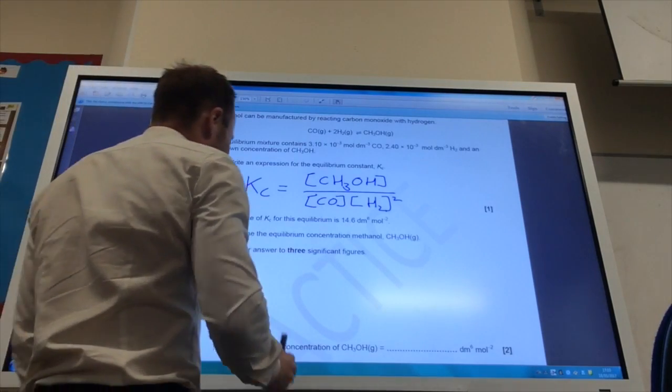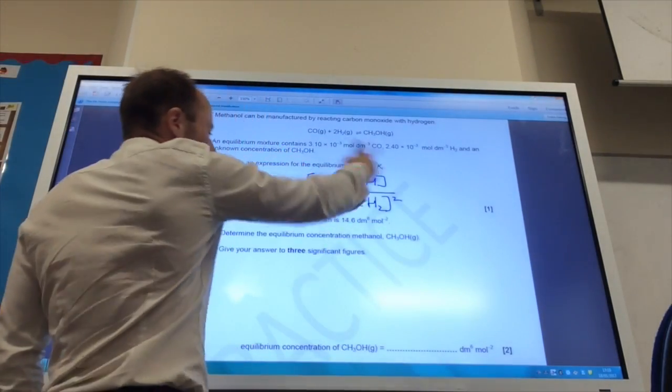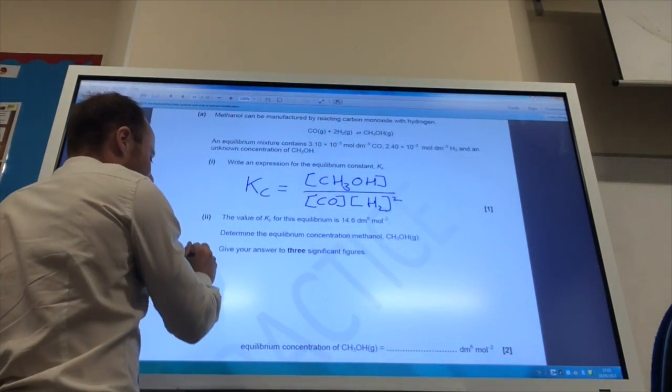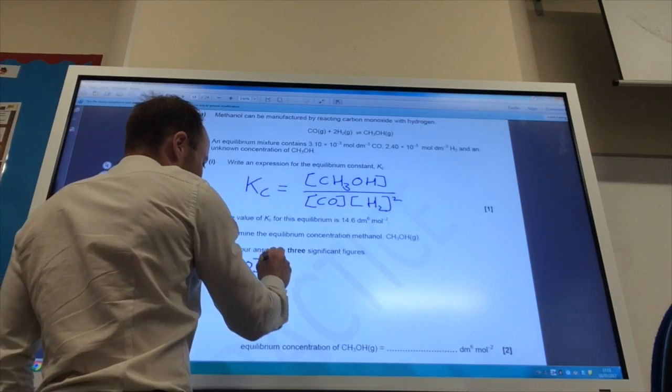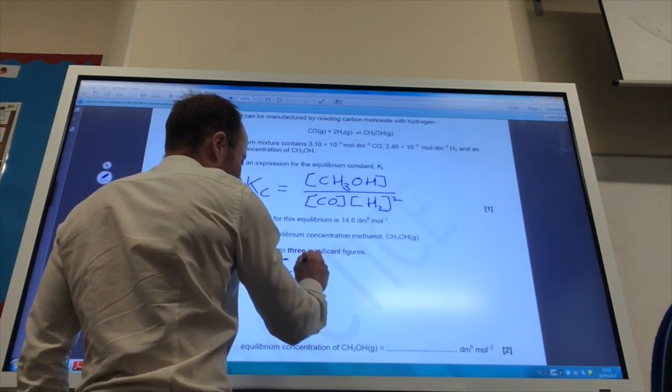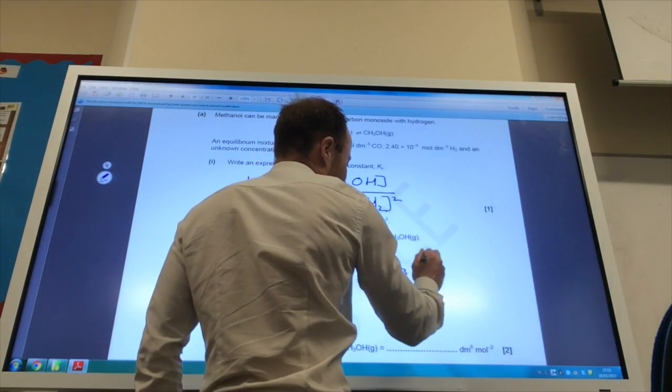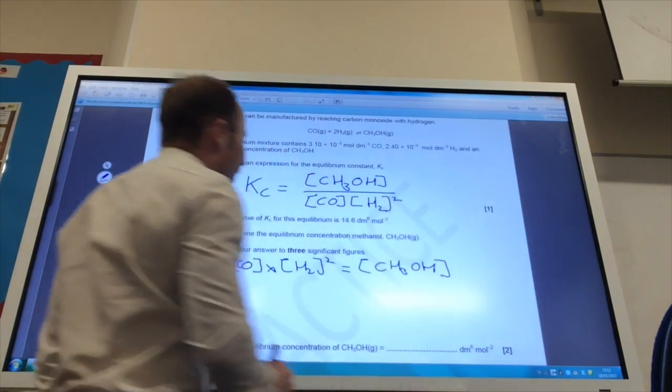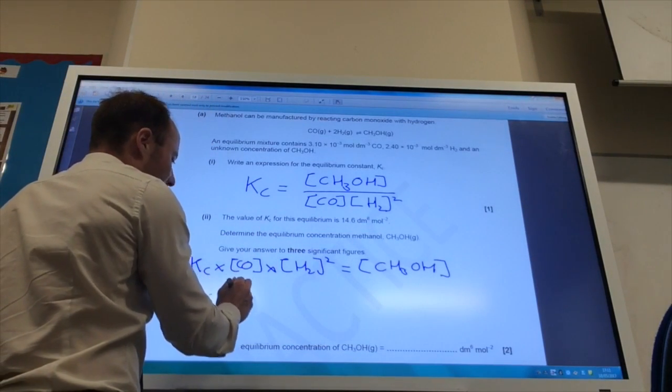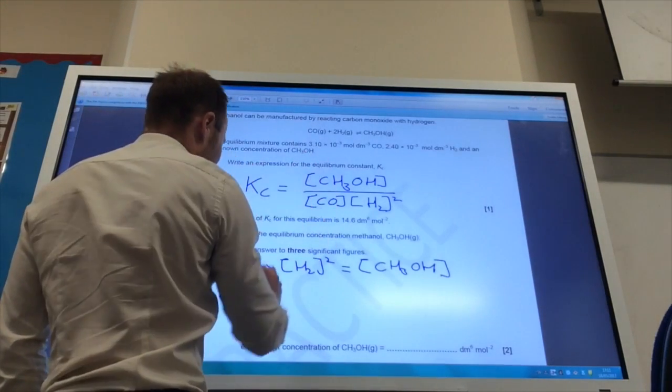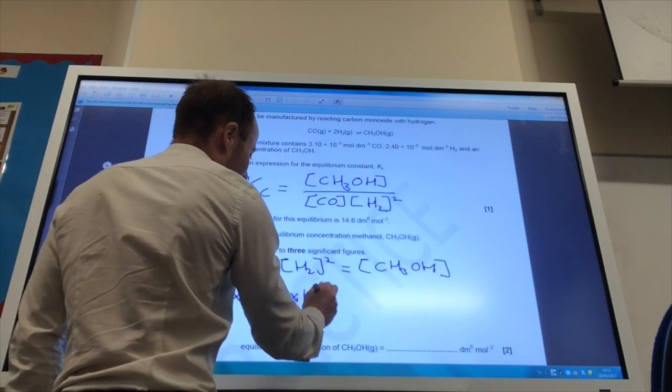It then gives me the value for Kc, and it wants me to work out the equilibrium concentration of methanol. So let's rearrange this expression. Kc times the concentration of carbon monoxide times the concentration of H2 squared is equal to the concentration of methanol. So then all we have to do is put some numbers in. Kc is 14.6. The concentration of carbon monoxide is 3.10 times 10 to the minus 3.